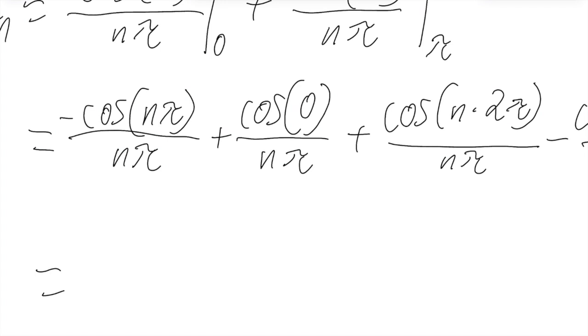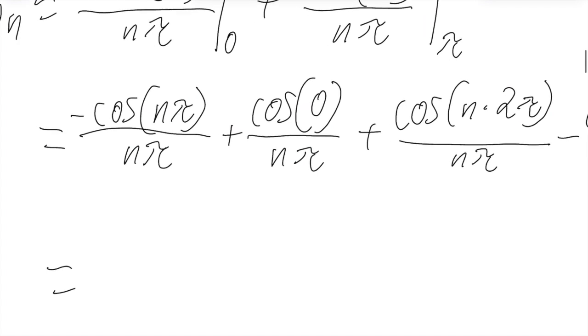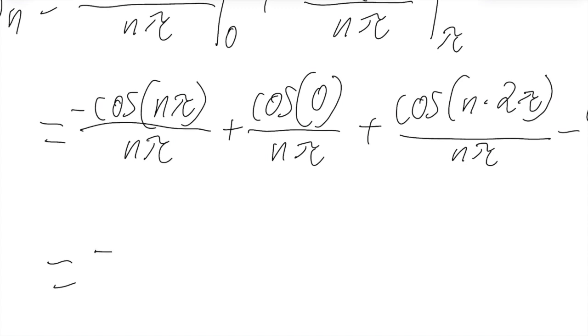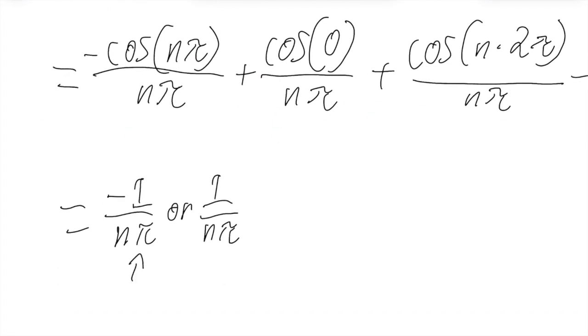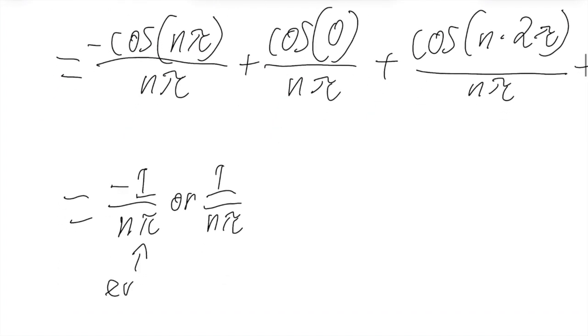So the negative cosine of an even multiple of π will be negative 1. And the negative cosine of an odd multiple of π will be 1. So this has two cases. It'll be negative 1 over nπ or 1 over nπ. This is even. This is odd.